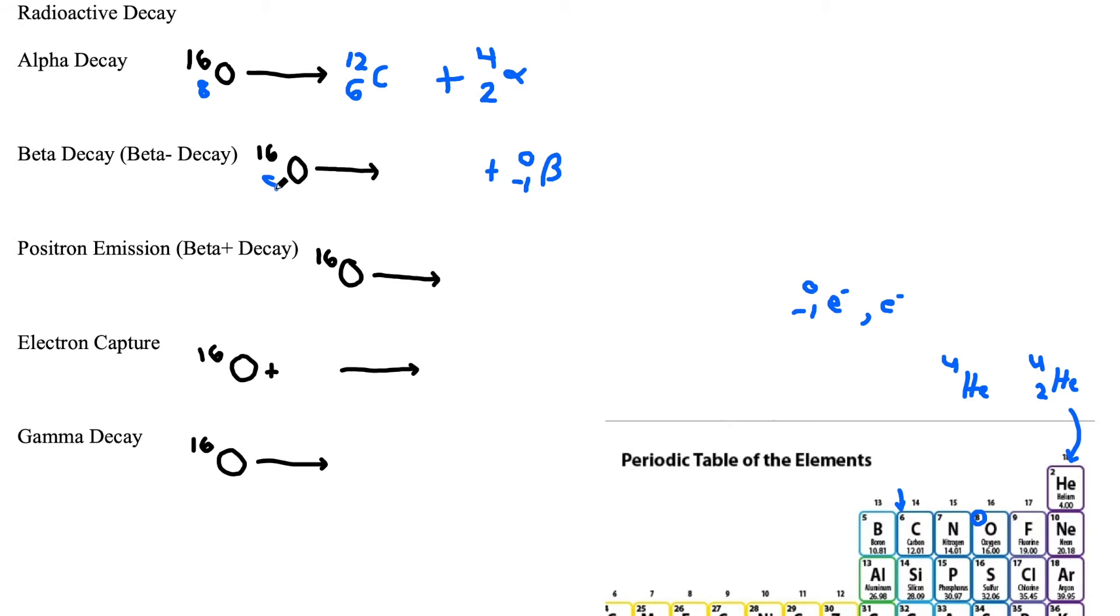So once again, we can write a little 8 for our atomic number of oxygen. And we have 8 on this side and negative 1 on this side. So interestingly, we gain a proton to get an element with the atomic number of 9. So that's going to be fluorine. And once again, we need to balance out the mass number, which in this case doesn't change because we have a 0 for a beta particle or electron that's being emitted. And our mass number must stay the same if we're not emitting any appreciable mass. So that's beta decay.